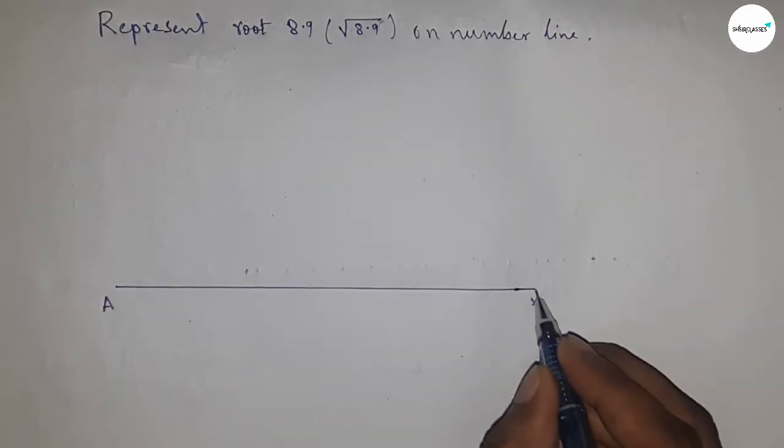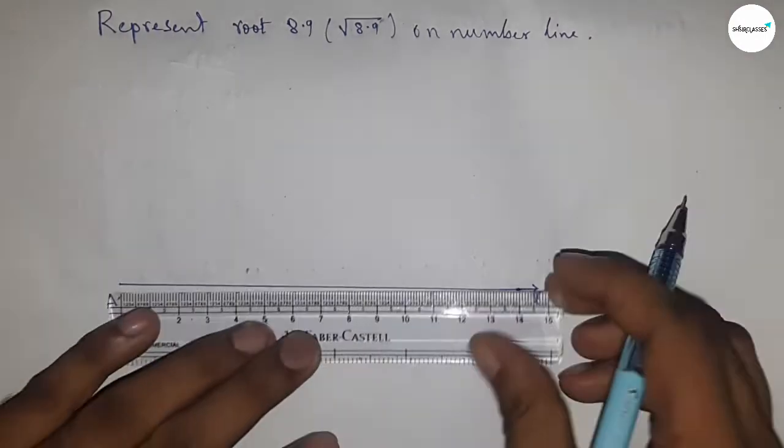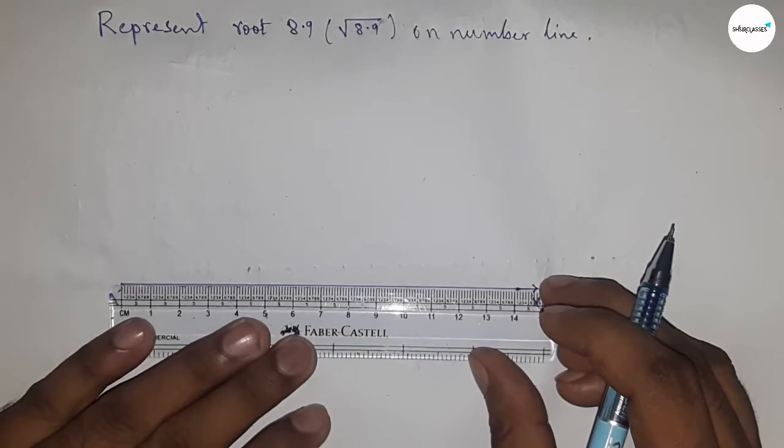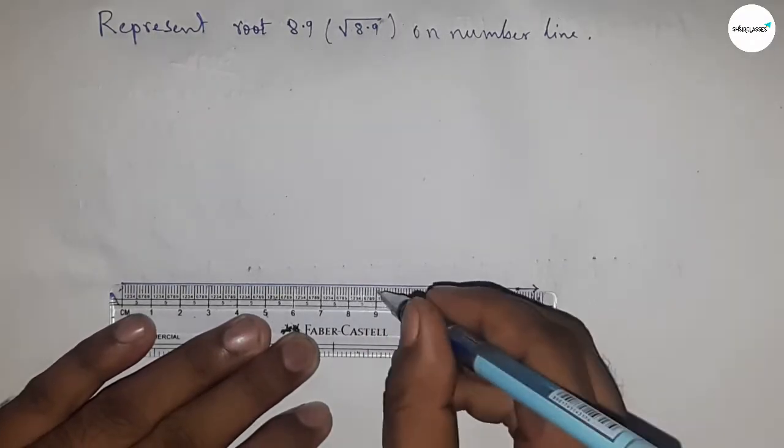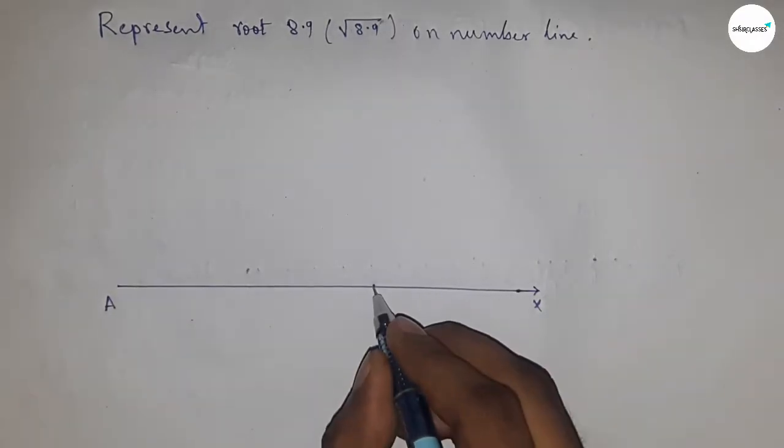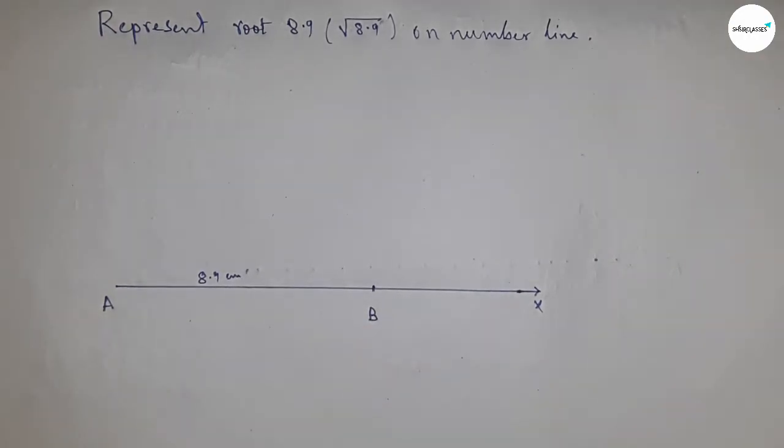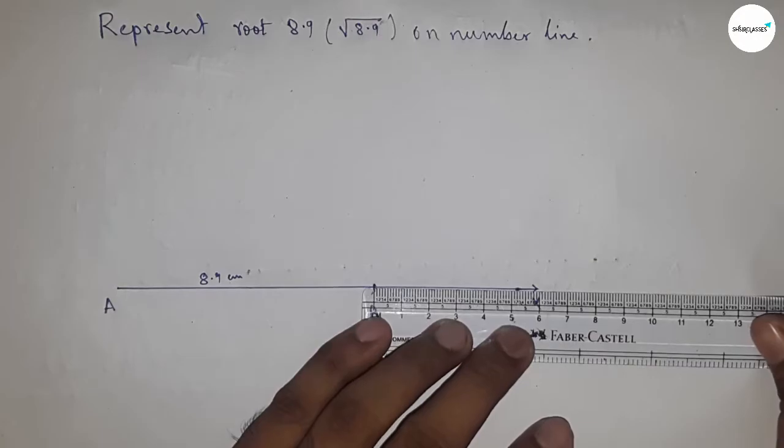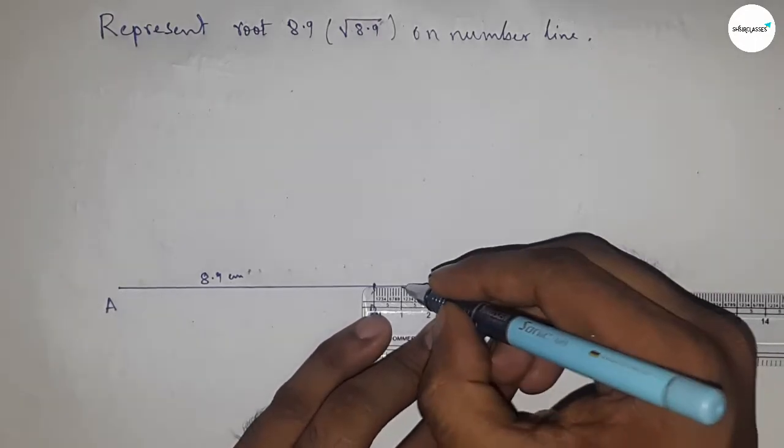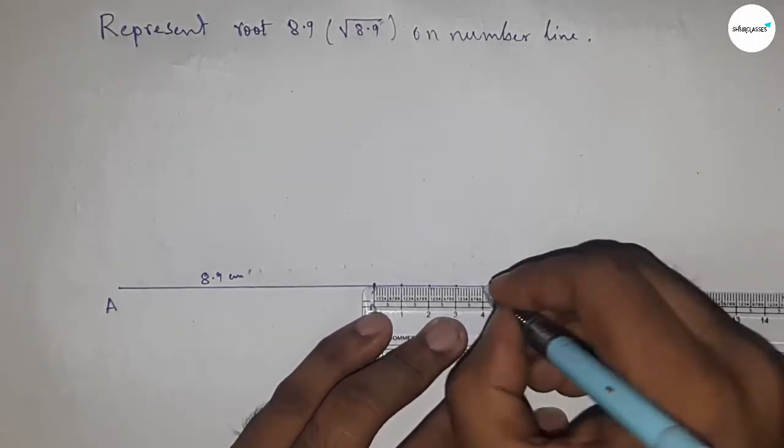Next, taking a length of 8.9 centimeters by using a scale, so this is 8.9 centimeters. This is point B, so AB equals 8.9 centimeters. Next, marking the numbers on the line from B to X by using a scale.